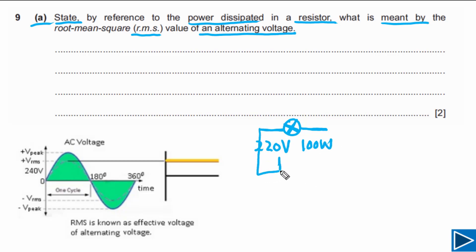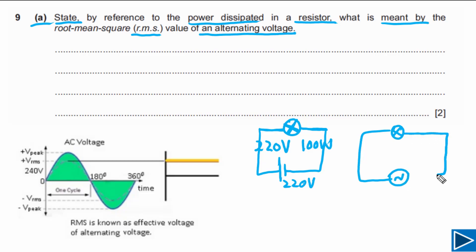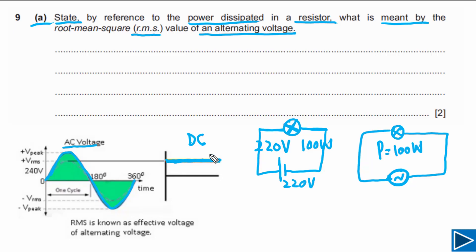If we connect this light bulb to a DC power supply of 220 volts, the power dissipated will be 100 watts. Now imagine connecting the same light bulb to an AC power supply — we need to find how much AC voltage is required so the power dissipated is also 100 watts. AC voltage changes with time and follows a sinusoidal curve, whereas DC is constant. We need to find the equivalent AC value that equals the DC value — and that is the RMS value.